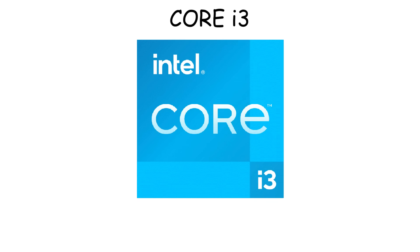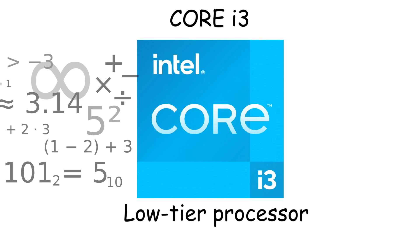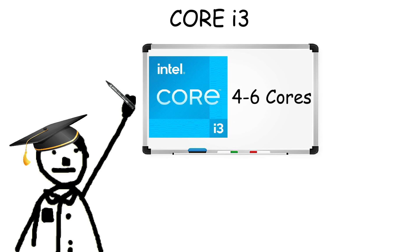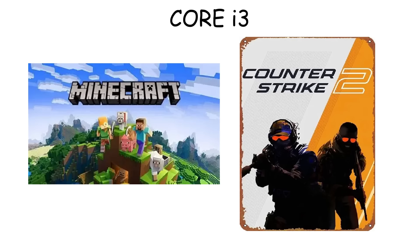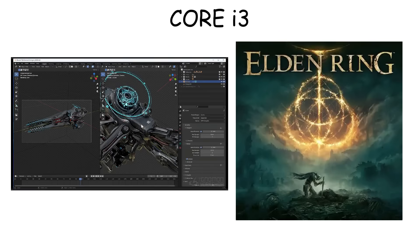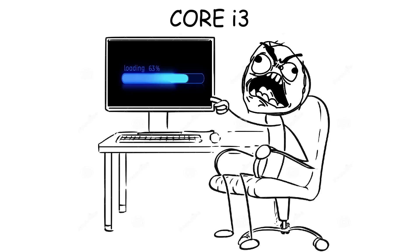Core i3 is Intel's low-tier processor that's built for basic computing and light multitasking. It usually comes with four to six cores, which is good enough for browsing the internet, watching videos, or working on several documents at once. You can even play some light games too, but if you try to run heavy work like rendering or a modern AAA game, it's possible but there's going to be some lagging and stuttering.